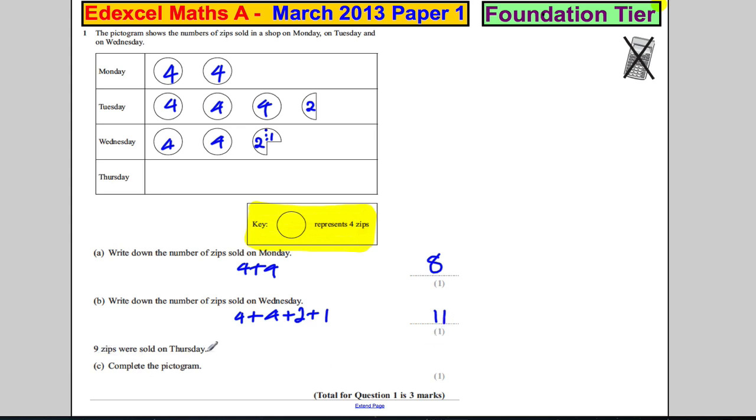And nine zips were sold on Thursday. Complete the pictogram. So going to Thursday, we want nine zips. So nine is clearly going to be four and it's going to be another four and whatever one is here. We can use the information above.